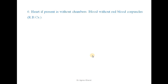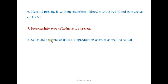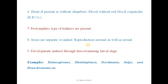Heart, if present, is without chambers, and blood is without red blood corpuscles. That is the reason the blood color is not red in these organisms. They have protonephric type of kidney. Sexes are separate or united. Reproduction is asexual as well as sexual. Development is indirect through free swimming larval stages.